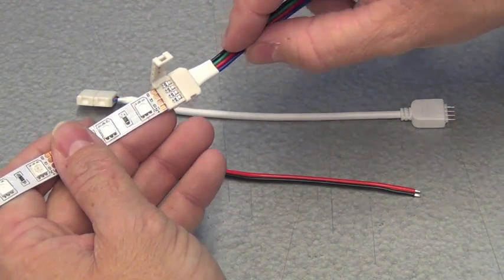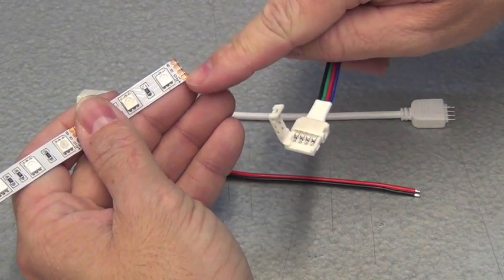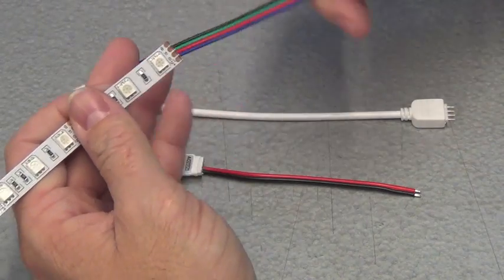If we were to insert it this way, it's backwards because the blue wire would actually be going in there. So this connector would need to be flipped around.